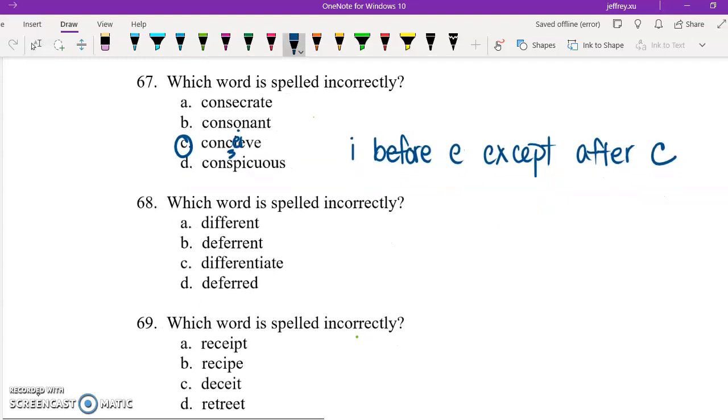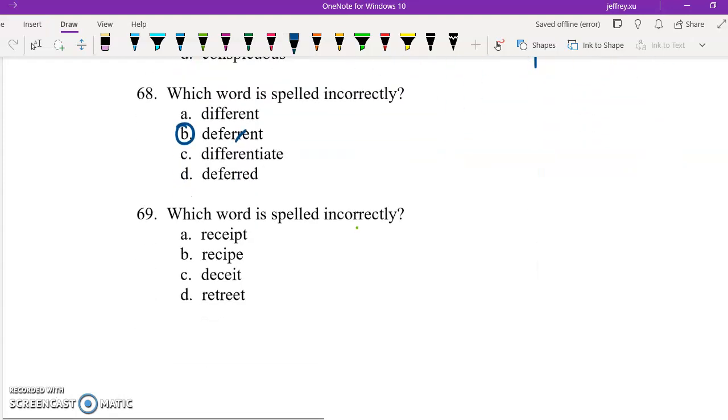68, there should not be a double R here. It's just one R for deferent. So B. Which is spelled incorrectly. This follows the I before E except after C rule, as does choice number C. Recipe is spelled correctly. Retreat is therefore spelled incorrectly because there should be an A instead of an E here.